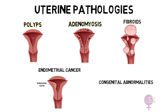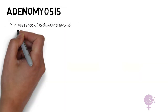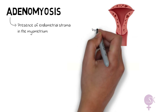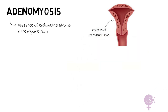Next, we're going to talk about adenomyosis. Adenomyosis refers to the presence of endometrial stroma within the myometrium. Essentially, what this means is that the endometrium — the lining which is built up during every cycle and shed during menstruation — is present within the muscular layer of the uterus. Every cycle, these endometrial deposits will bleed within the myometrium, forming pockets of blood, as we can see here.